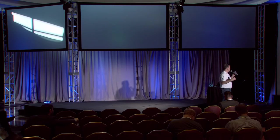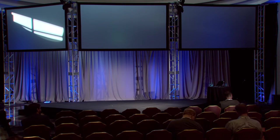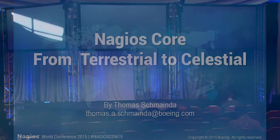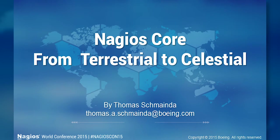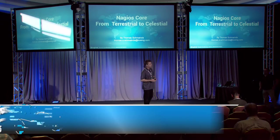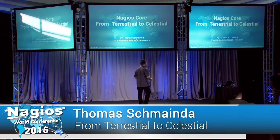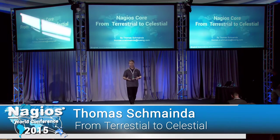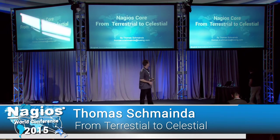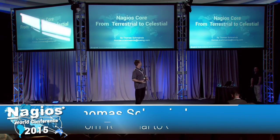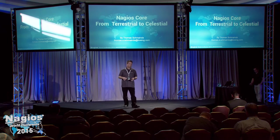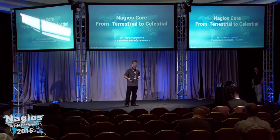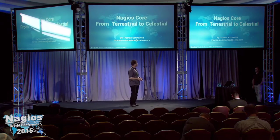This is "How to Monitor a Satellite" by Thomas Schmeinde. The title is a little different than originally planned — thanks to a colleague and manager who reviewed the content. We needed a concept to tie everything together, so we came up with "Nagios Core: Terrestrial to Celestial." That tells the story of how we took Nagios from our data center and mission control center to space.